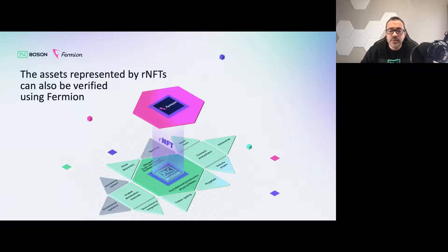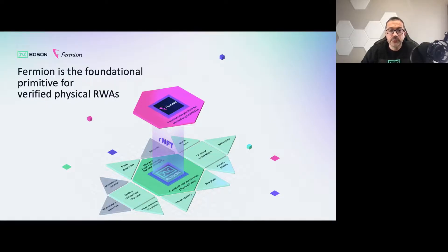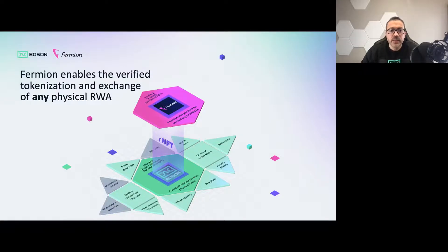These assets can also be represented and verified using Fermion. Fermion is the foundational primitive for verified physical real-world assets, enabling the verified exchange and tokenisation of any physical real-world asset.